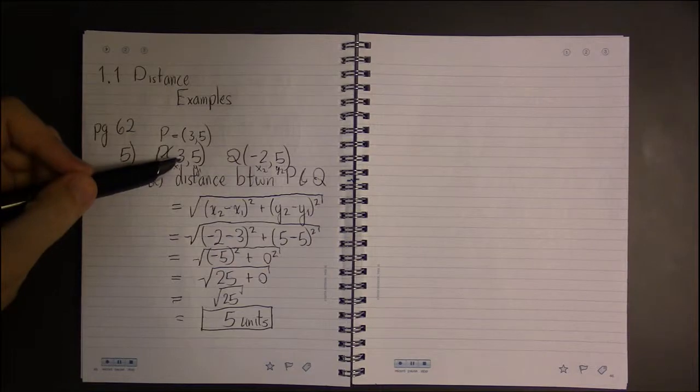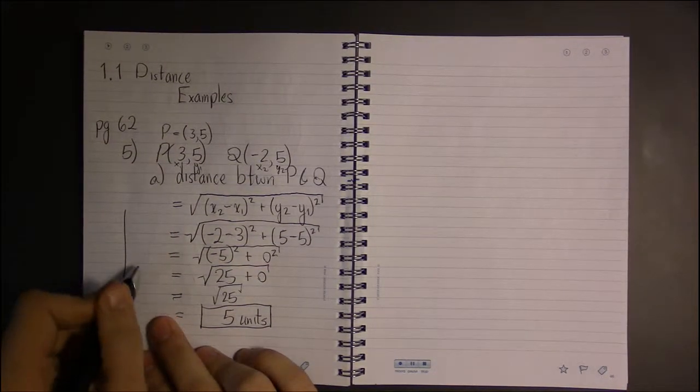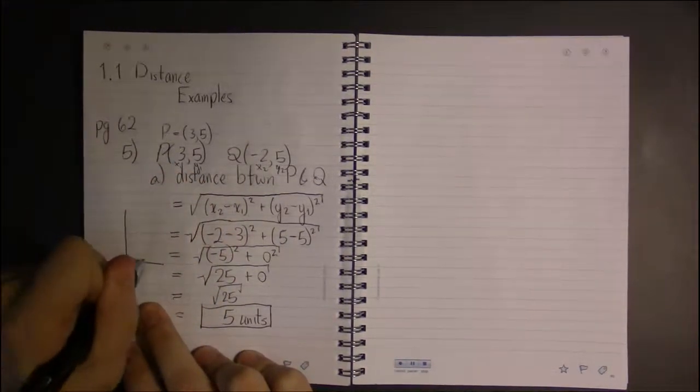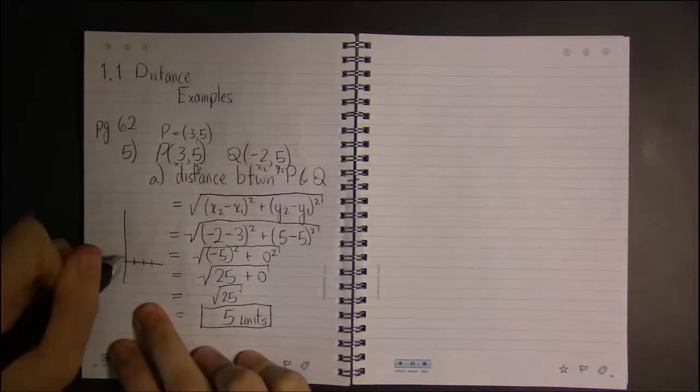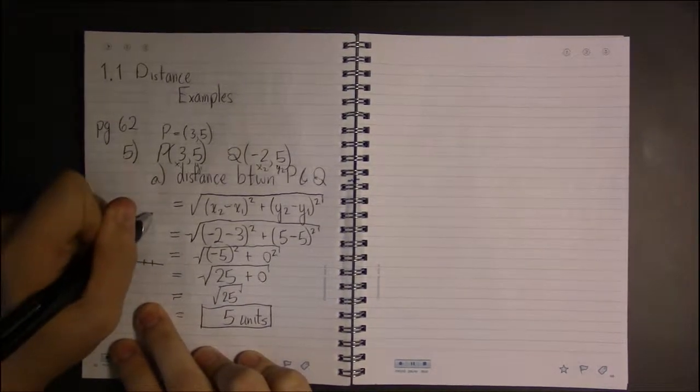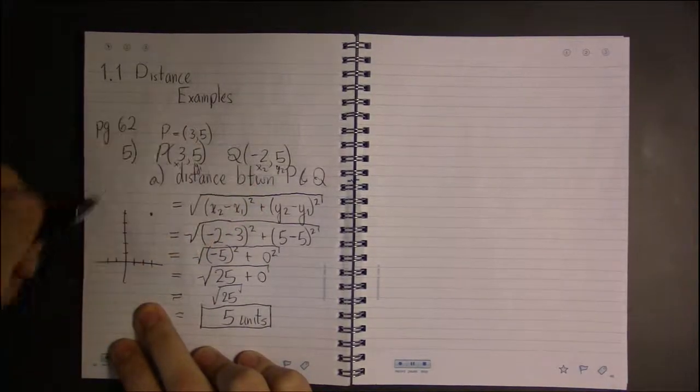This is actually pretty good because if you think about it, in this case this is a rather special case. Three units over and one, two, three, four, five up. So something like here, one, two to the left for Q.